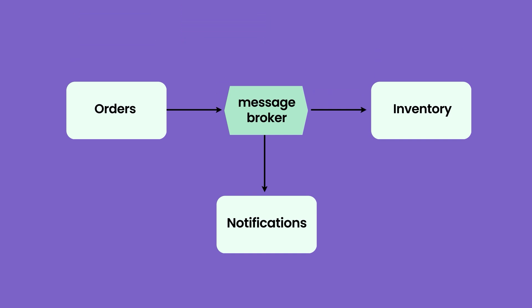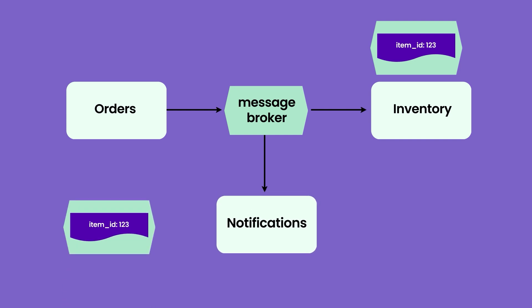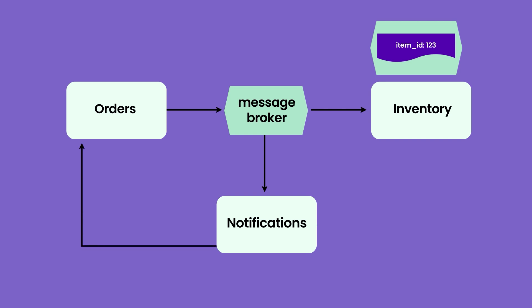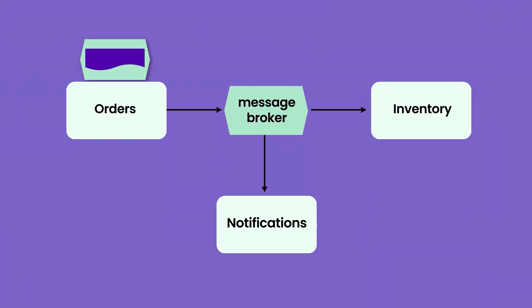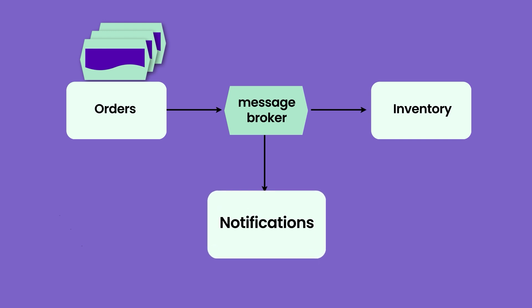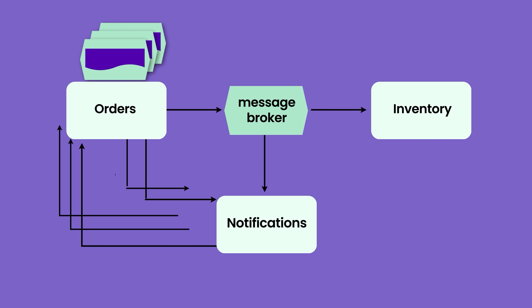Another approach is to use two types of communication. You can send the item ID in events for inventory, and the notification service consumes this item ID but also wants customer details. You might send the order ID with this event, then ask the order service to give back the customer details for that order ID via API or request-response based communication. However, there can be certain problems here: if you are emitting hundreds or thousands of events per minute and each one triggers an API call back to the emitting service, it will be overloaded with API calls.